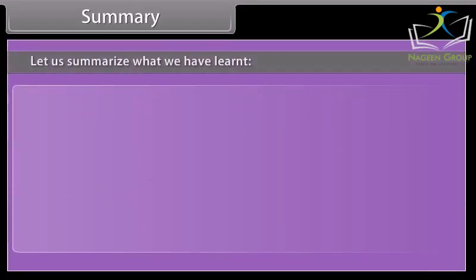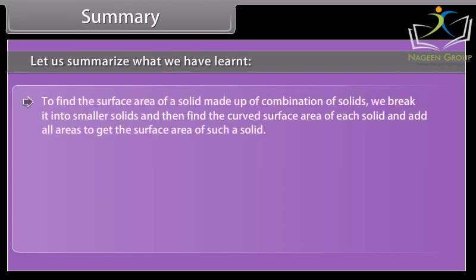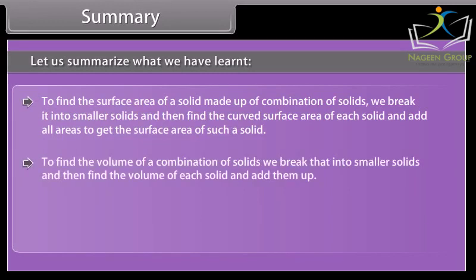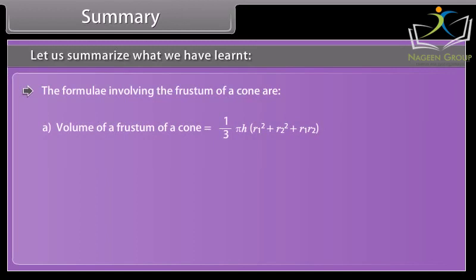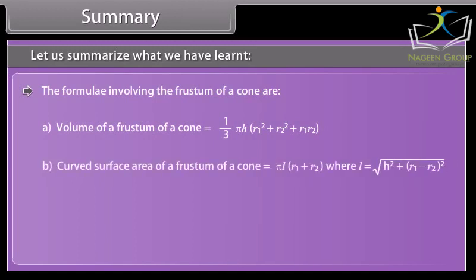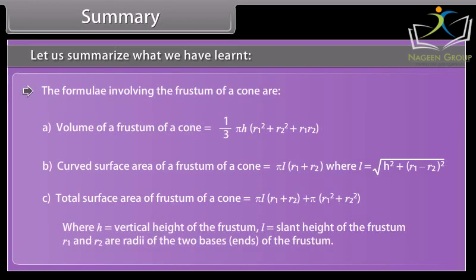Summary: To find the surface area of a solid made up of a combination of solids, we break it into smaller solids, find the curved surface area of each, and add them. To find the volume of a combination of solids, we break it into smaller solids, find each volume, and add them. A frustum of a right circular cone is formed when a cone is sliced by a plane parallel to its base and the smaller conical portion is removed. The formulae involve H (vertical height), L (slant height), and R₁ and R₂ (radii of the two bases).